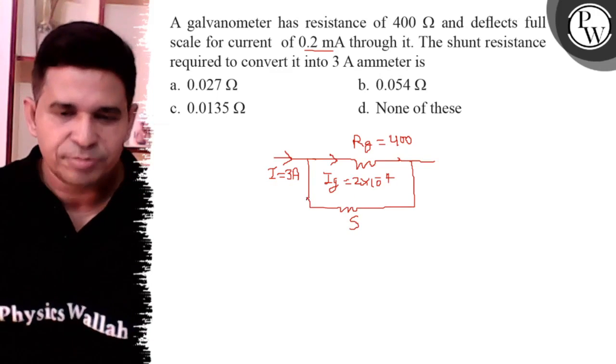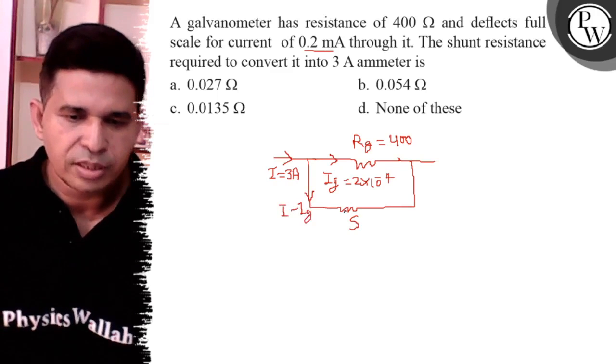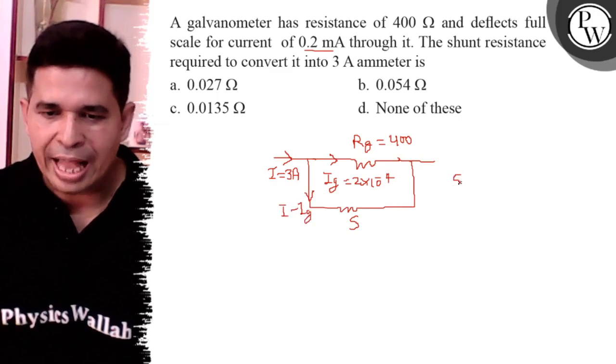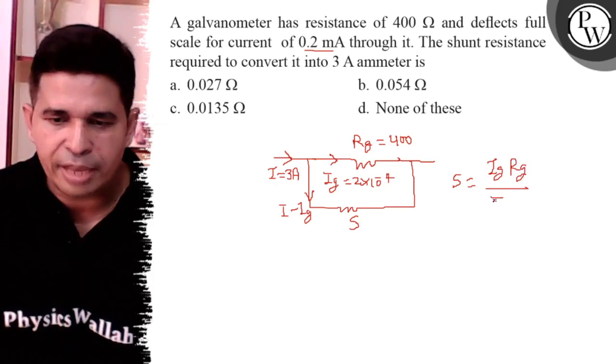We know that it is I minus IG. S is equal to IG RG upon I minus IG.